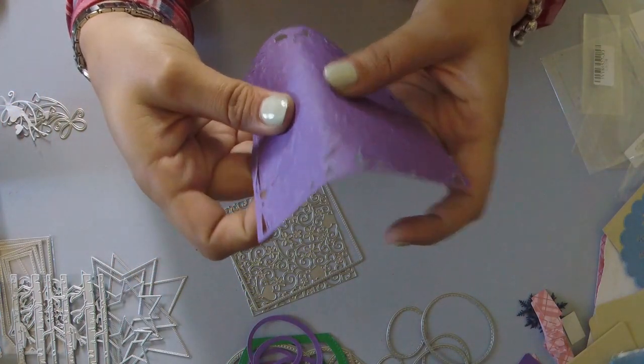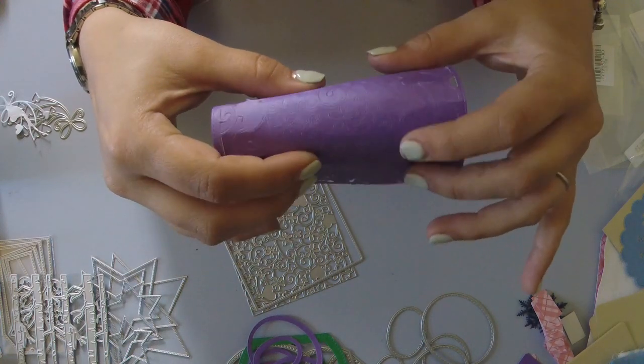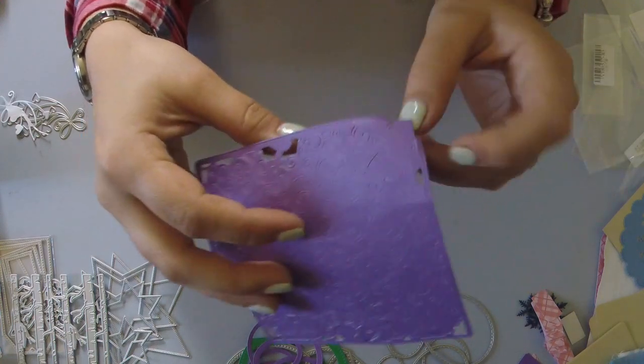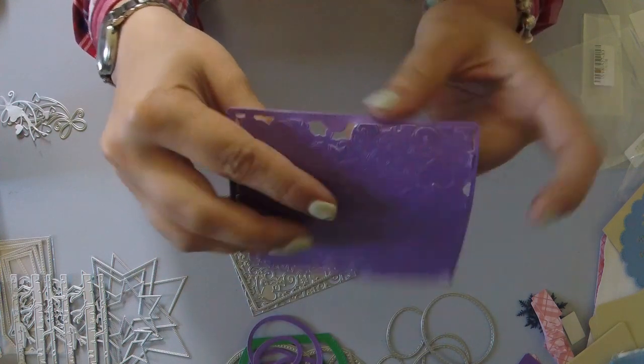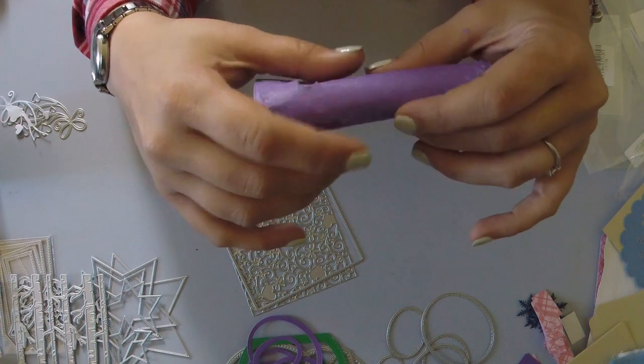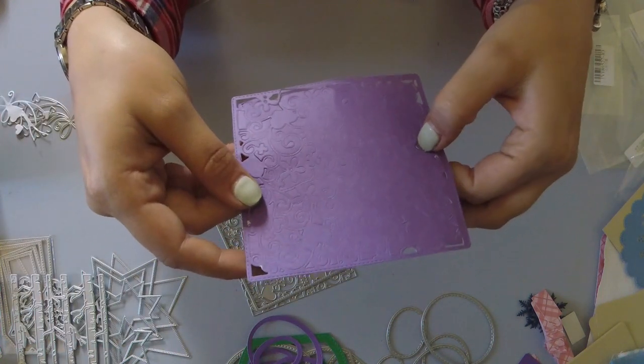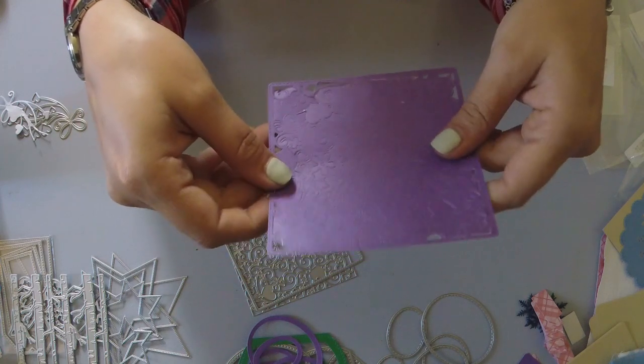And it basically just embosses the design onto the paper, I get little parts where it cuts out. And it doesn't seem to matter how many times I run it through. It's just, I cannot get the intricate dies to work on my cuddle bug.